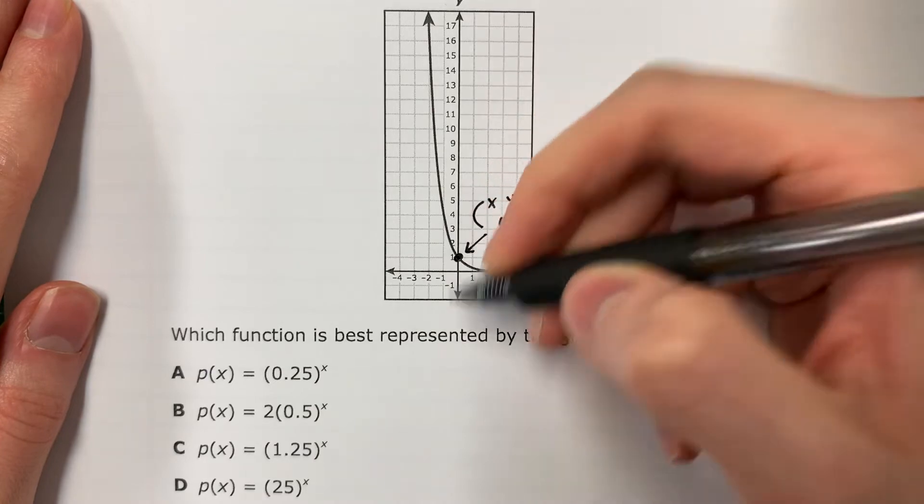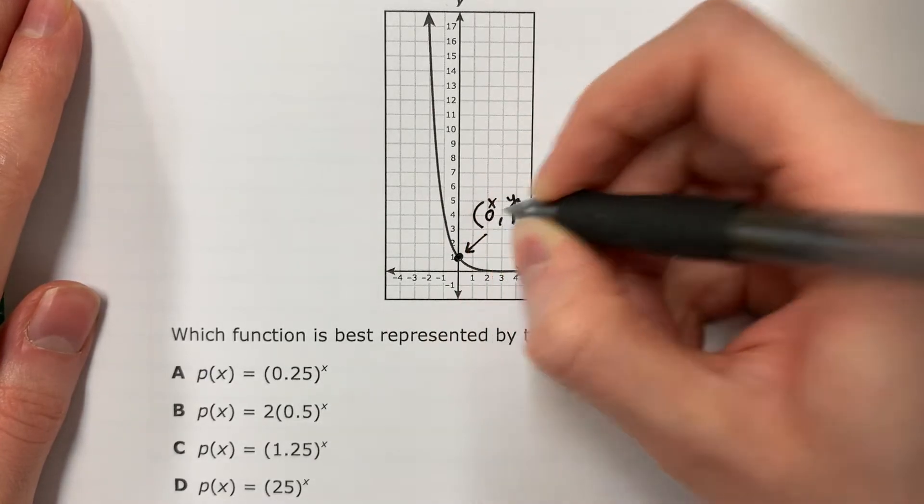So this is one. And then X is zero. So I have zero, one.